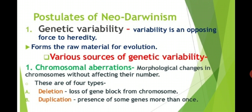The first source of genetic variability is chromosomal aberrations. These are morphological changes in the chromosomes without affecting their number. There are four types. The first is deletion, which is the loss of a gene block from the chromosomes. The second is duplication, which is the presence of some genes more than once.